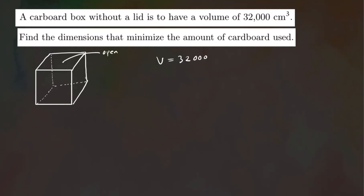Let's put some dimensions in. We'll call this X, this is Y, and the height will be Z. The volume is going to be length times width times height: X times Y times Z equals 32,000. Let's go ahead and solve this for Z, so Z is going to be 32,000 divided by XY.